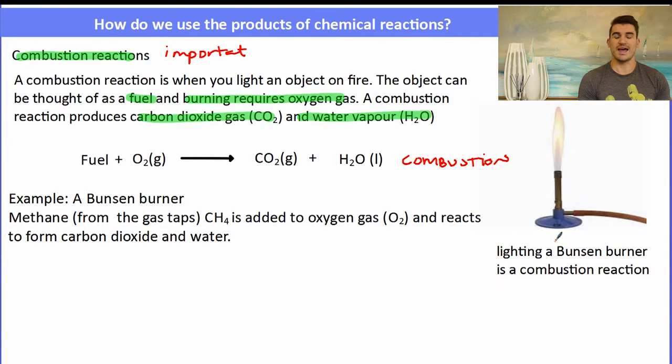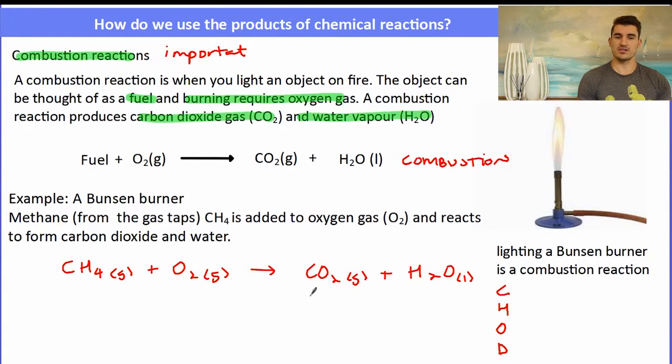So a Bunsen burner has methane from the gas tap. Oxygen is added from the air and it reacts to form carbon dioxide and water. We can write an equation for this. CH4 gas plus O2 gas forms carbon dioxide, CO2 gas plus H2O liquid. Now there's a little bit of a trick to balance a combustion equation. We start off by balancing for carbon. I've got one carbon on the left, one carbon on the right. Then I balance for hydrogen. I've got four on the left so I need to double the amount of water. And then I look to balance the oxygens. I have four oxygens on the right and now I need to add four oxygens on the left. So I need two oxygens.